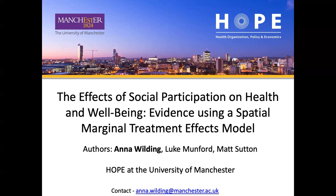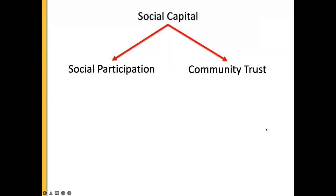I'll go straight into the theory behind what social participation is. Social participation comes under the umbrella of social capital. From the Putnam definition, social capital is to do with connections with others that enrich people's lives. These connections have two parts: the tangible part, which is the membership of community groups, which leads into social participation, and the intangible part, which is the community trust element.